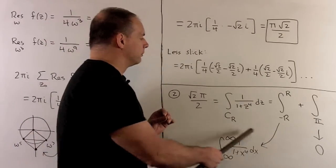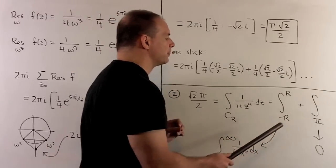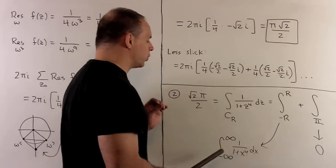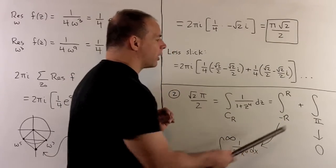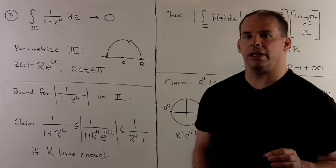We have our closed curve here. We're going to break that up into two pieces. One part that we're going to want to go to our improper integral. The other part we're going to want to go to zero.